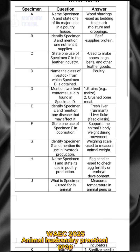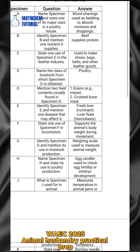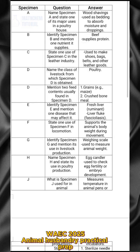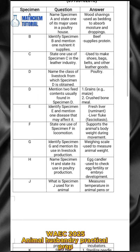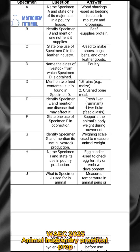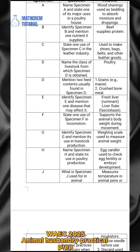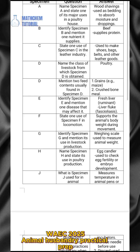For specimen E, identify it and mention one disease that may affect it. The answer is fresh liver from a ruminant. The disease that may affect it is liver fluke.